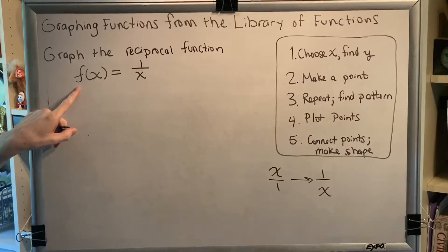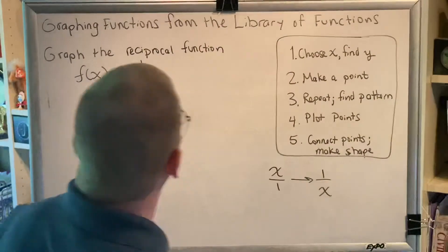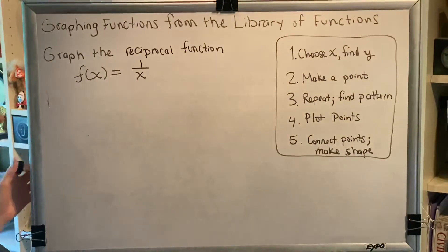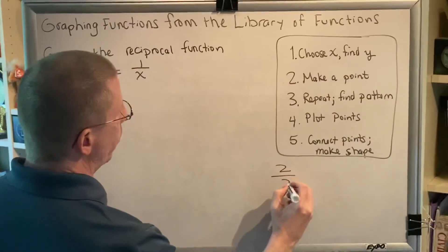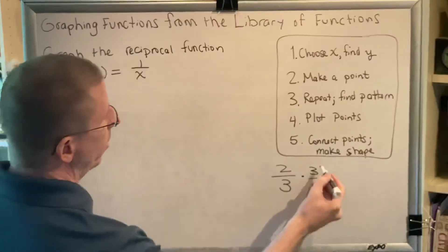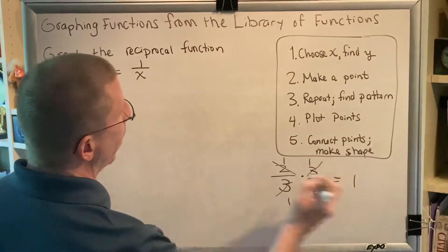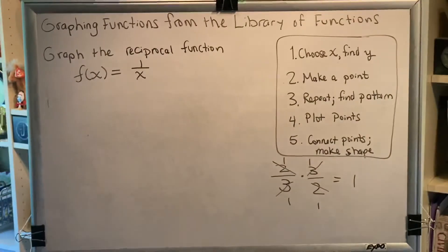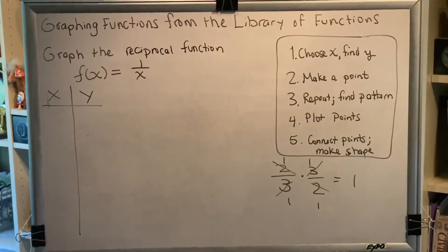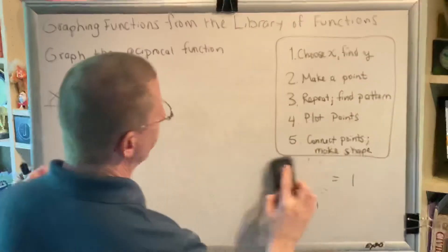x is the input. f is the process, which turns it into 1 over x. Another principle of reciprocals that you may have heard in the past is that when you multiply a number and its reciprocal, you always get the result 1. So, for example, we know that the reciprocal of 2 thirds is 3 halves. What happens when you multiply two reciprocals together? The 3s cancel, the 2s cancel, so everything turns into the number 1, and we get 1 as our final answer. So, when you're creating your table of points for the reciprocal function, you want to remember this fact and keep this in mind. Your x and your y will multiply to make 1.